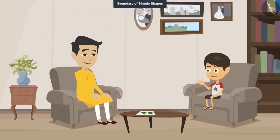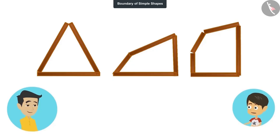What? I thought that if a figure has more number of edges, then the length of its boundary will also be more. But it is not so. The number of edges in these three shapes is also different. This figure has three edges. This figure has four edges. This figure has five edges. Yet the length of the boundary for all is 15 centimeters.